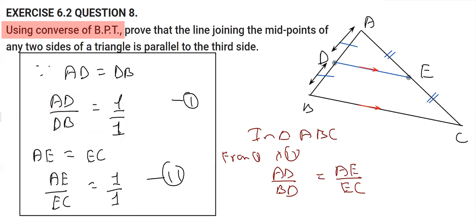Now, as you know, in a triangle, if a line divides the two sides in the same ratio, then we can say that the line DE will be parallel. So by converse of BPT, we can say that this line DE is parallel to BC.